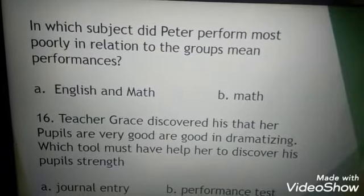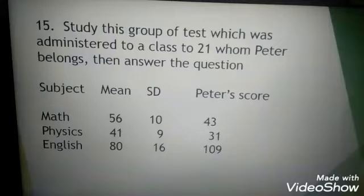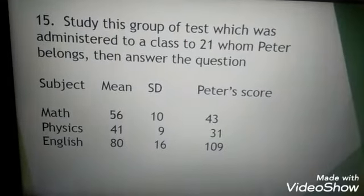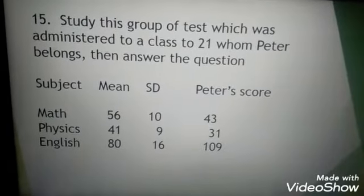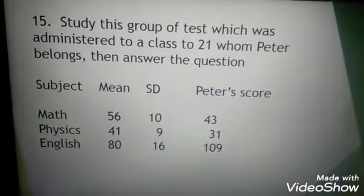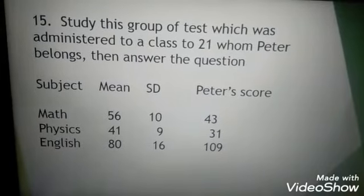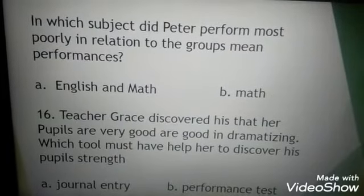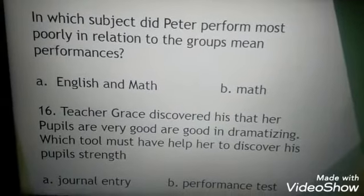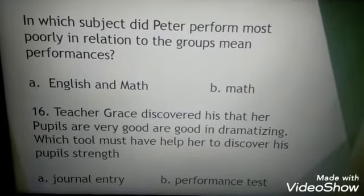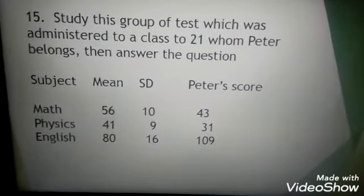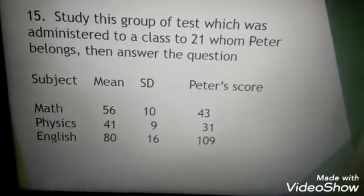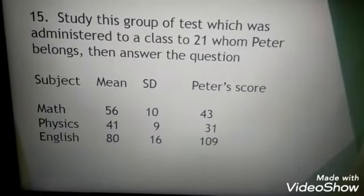So we are looking for the mean. Mean for math: 56, physics: 41, and English: 80. What could be the answer? Is it A, English and math, or B, math? The answer is math. Remember, mean is two point.